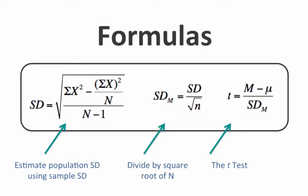What we will then do is divide our standard deviation of the sample by the square root of the sample size, and that will give us the estimated standard error of the mean. Finally, the estimated standard error of the mean will go in the denominator of our t-test after we subtract the population mean from the sample mean.